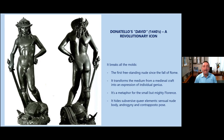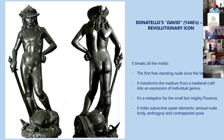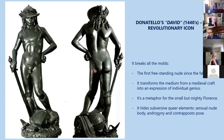Donatello created this statue around the 1440s, and it really broke all the molds. This is the very first freestanding male nude statue since antiquity. It revolutionized art, transforming sculpture from what was considered a medieval craft into an expression of individual genius. Representing the David versus Goliath story, this sculpture was created by Donatello as a metaphor for the small but mighty city of Florence, which had huge cultural importance under the Medici, in spite of being at war with very powerful enemies. But this statue is covered with very subversive queer elements.